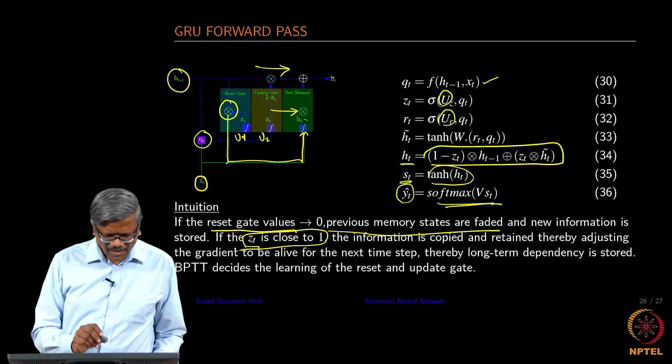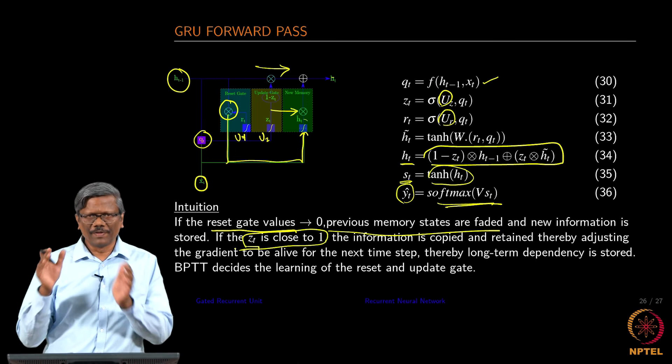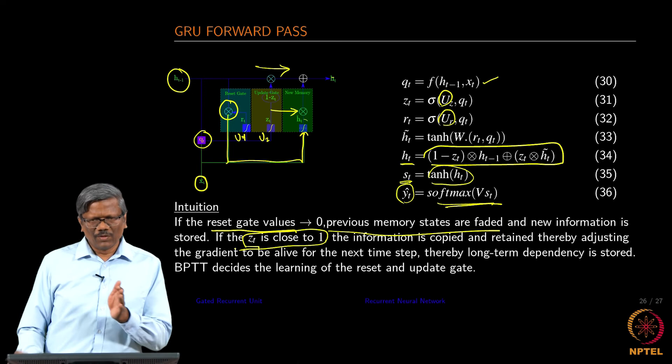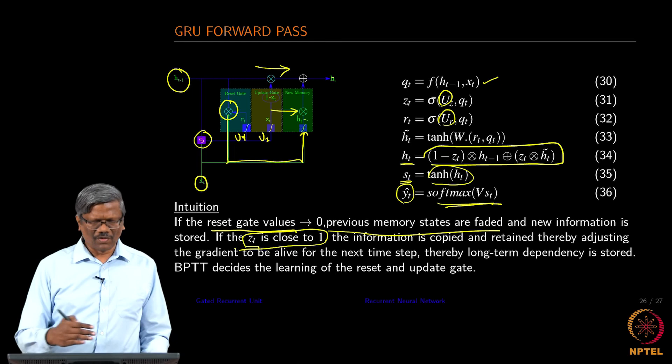Those values really condition the matrices that come across. Since the gates already have conditioned the values in such a way that there is going to be a gradient alive when you back propagate, we will not get into the problem of vanishing gradient.